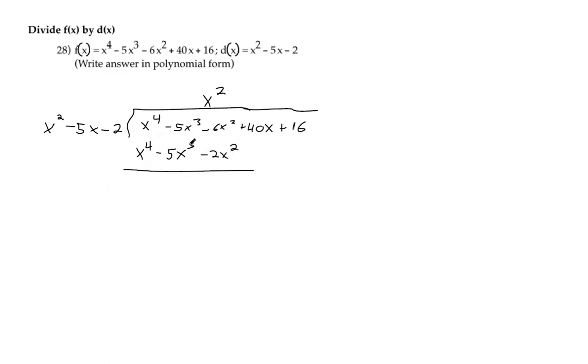And then remember you always subtract the top by the bottom to make this cancel out like we wanted. Negative 5x squared minus a negative 5x squared that makes zero. So negative 6x squared minus a negative 2x squared that makes negative 4x squared, because that's like minusing a negative means adding.